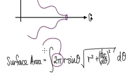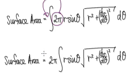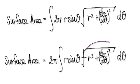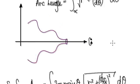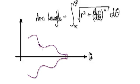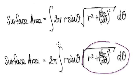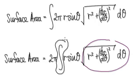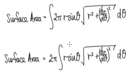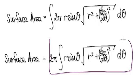So if you look at this, 2π is a constant — we can take it out. So the surface area is given by this constant 2π multiplying with the sum of the arc length times the circumference of the circle. The surface area is given by this expression here if you revolve it 360 along the x-axis.